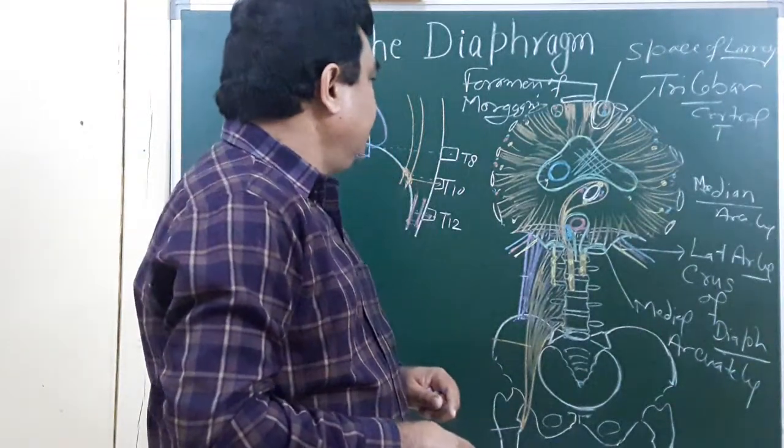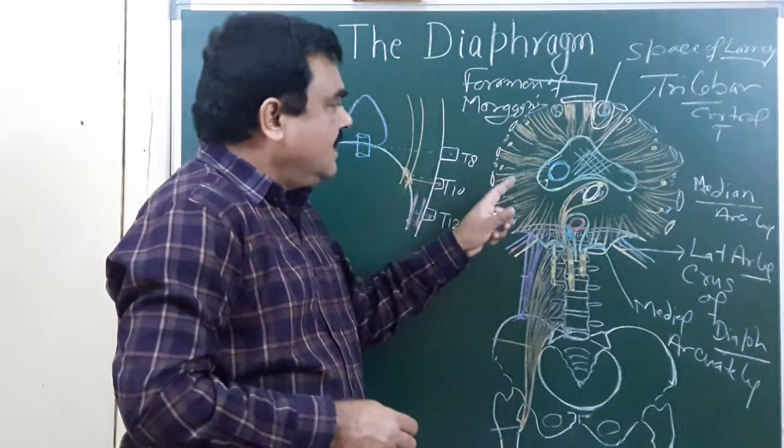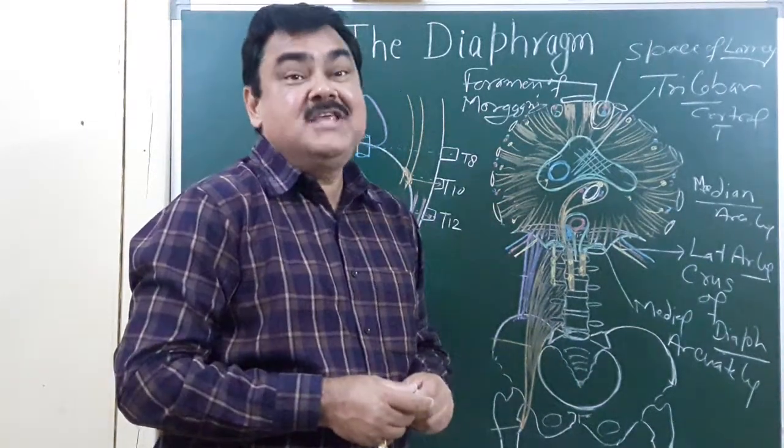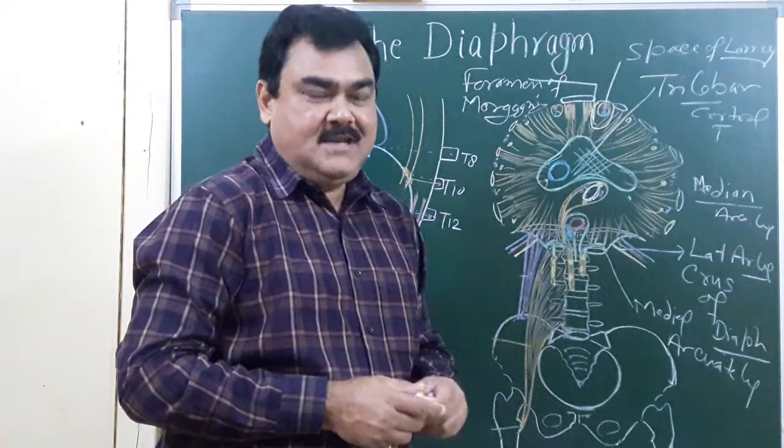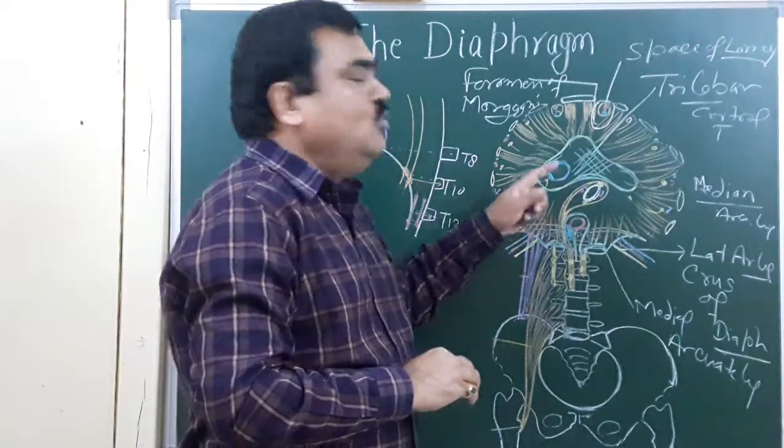Another important thing is the action of this muscle. This muscle is the chief muscle of respiration, inspiration. During inspiration it contracts and depresses the diaphragm downward.